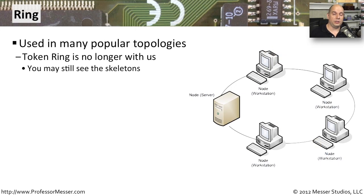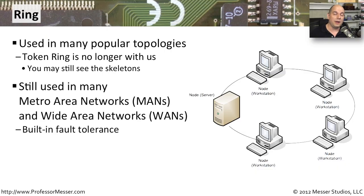We still see ring technologies used in many places, though you usually don't see it in the local area network any longer. Token ring is one you don't often see anymore, but if you go into the back infrastructure with some legacy devices, you may still see token ring equipment powered on and sending data between devices that have to be there to keep the business running. Where you commonly see a ring network is in larger networks — metropolitan area networks and wide area networks use rings because of fault tolerance.